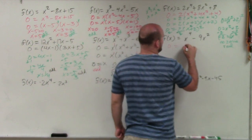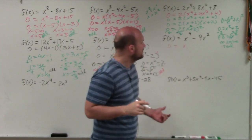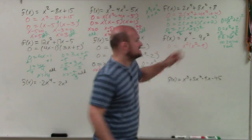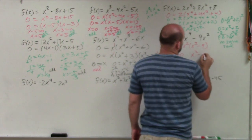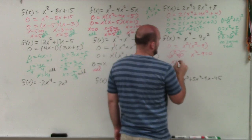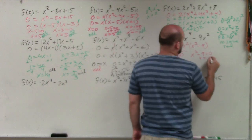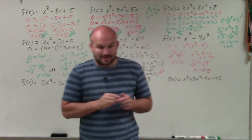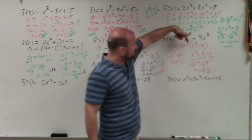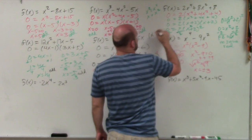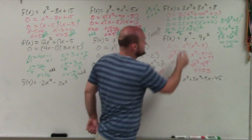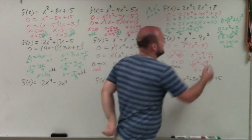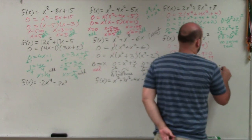Next example: set equal to 0. I notice they both have a squared, so I can factor out an x squared. When I factor out x squared, I'm left with x squared times x squared minus 9. Setting both equal to 0: x squared equals 0 gives x equals 0; for x squared minus 9 equals 0, add 9 to get x squared equals 9, so x equals plus or minus 3. Going back to multiplicity: the x squared factor has a power of 2, giving even multiplicity at zero. The x squared minus 9 factors have a power of 1, giving odd multiplicity at plus or minus 3.